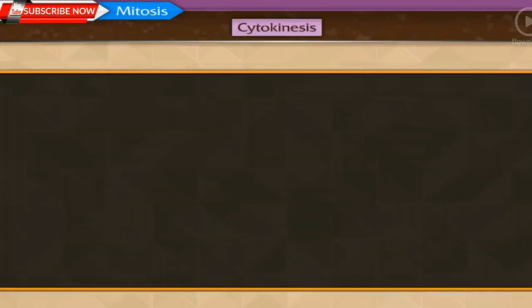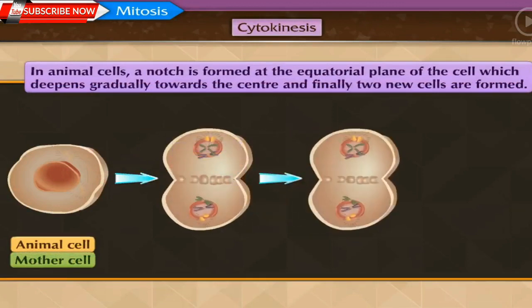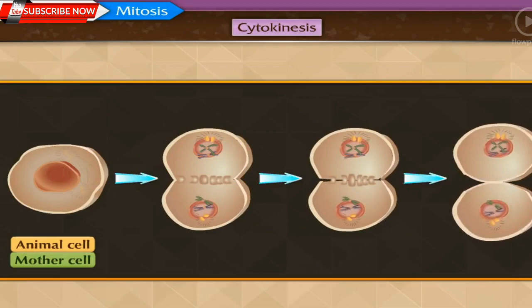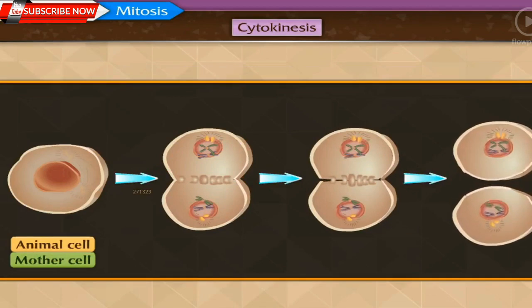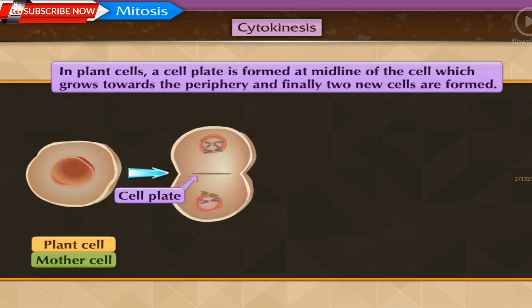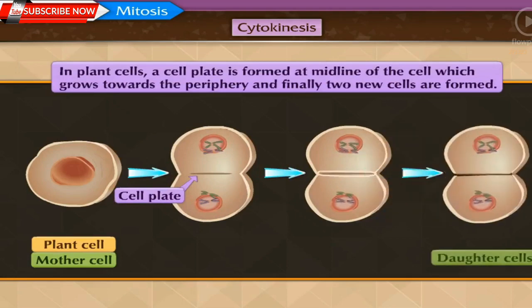Cytokinesis: in animal cells, a notch is formed at the equatorial plane of the cell which deepens gradually towards the center, and finally two new daughter cells are formed. In plant cells, instead of a notch, a cell plate is formed exactly at the midline of the cell which grows towards the periphery — and thus cytokinesis is completed.